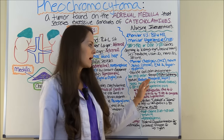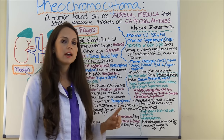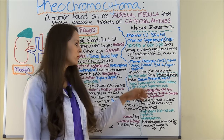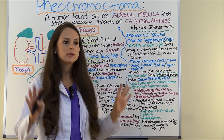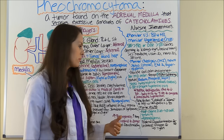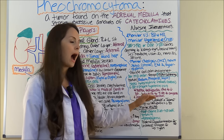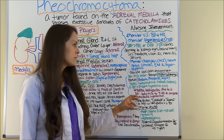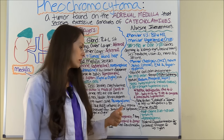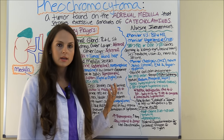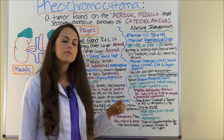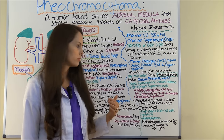With alpha adrenergic blockers, watch for reflex tachycardia — when blood pressure decreases, the body compensates by causing tachycardia. It can also cause orthostatic hypotension. Once blood pressure is under control, the physician may order a beta blocker such as labetalol or Inderal to help with that tachycardia and to further decrease blood pressure. As a nurse, monitor blood pressure and heart rate to make sure the patient is responding normally.